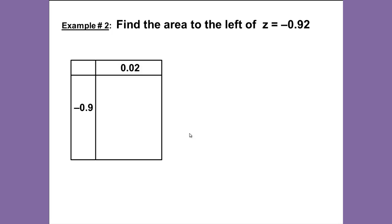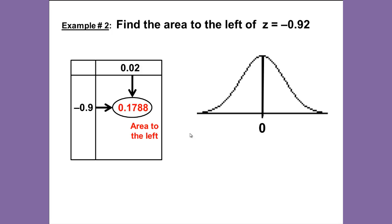Notice in this case, the ones place is 0, the tenths place is 9, and it is negative. So we want to be sure that we remember to look up negative 0.9 in the left column and 0.02 in the top column. Go across and down to where they cross. That will give us 0.1788, and that is the area to the left.